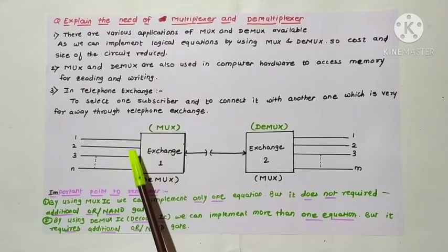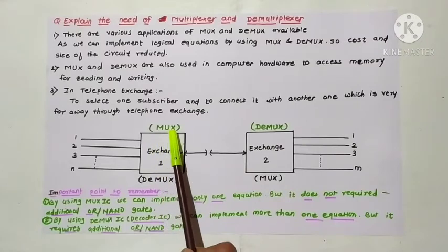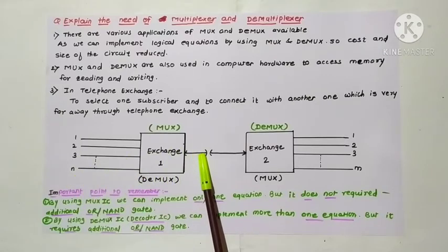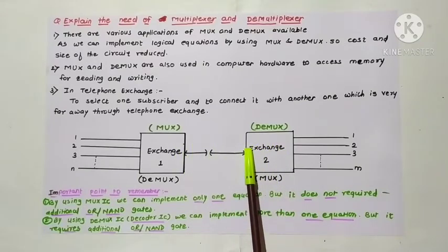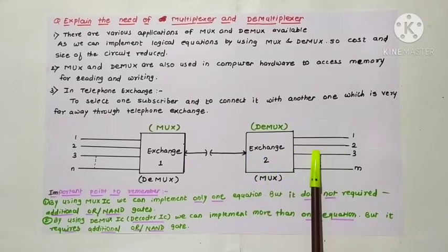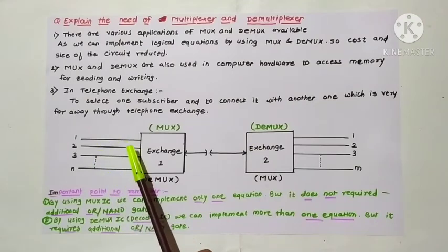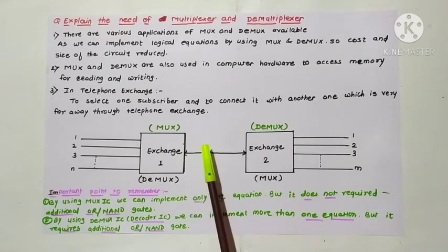Suppose this is Exchange 1 and this is Exchange 2. The multiplexer has 1, 2, 3 up to N inputs and only a single output. The demultiplexer is exactly opposite to the multiplexer — it has only one input and many outputs like 1, 2, 3 up to N. Any one input is selected and passed through the multiplexer, and out of many outputs only one is selected.